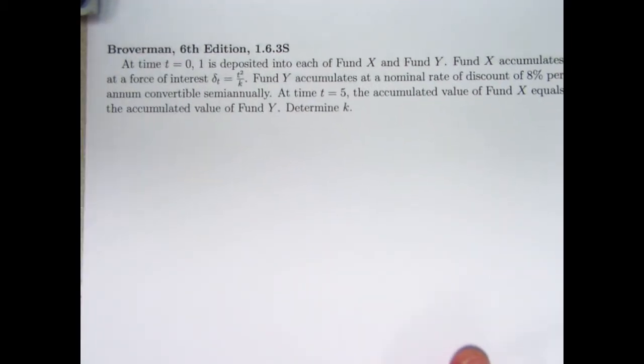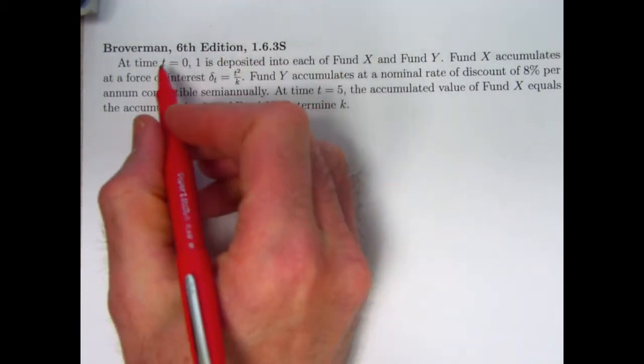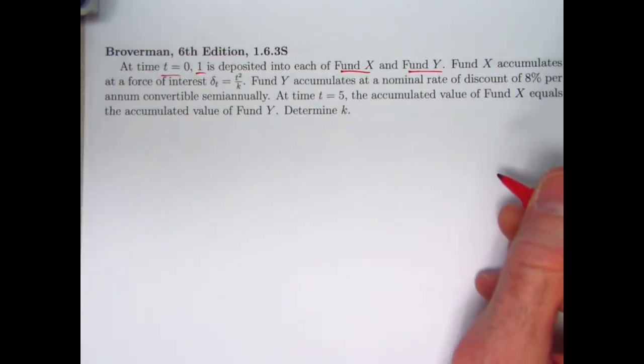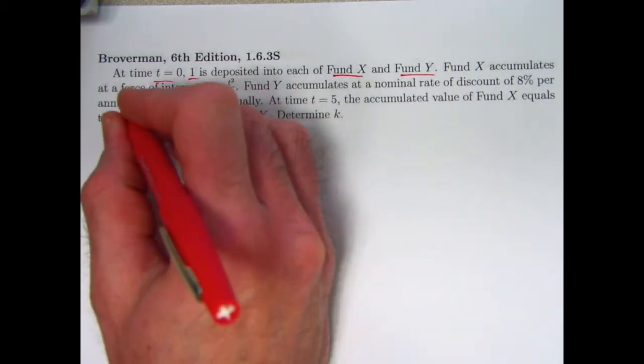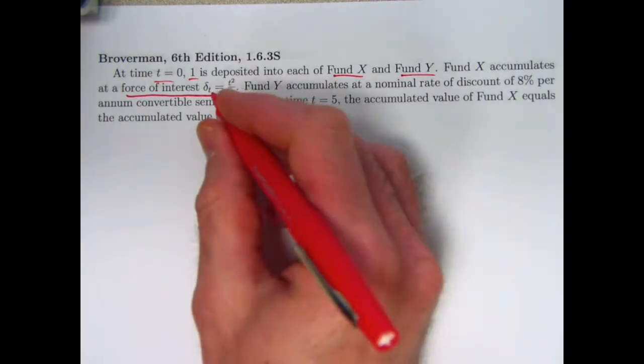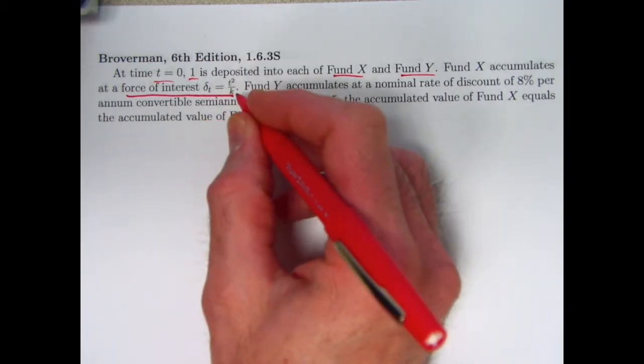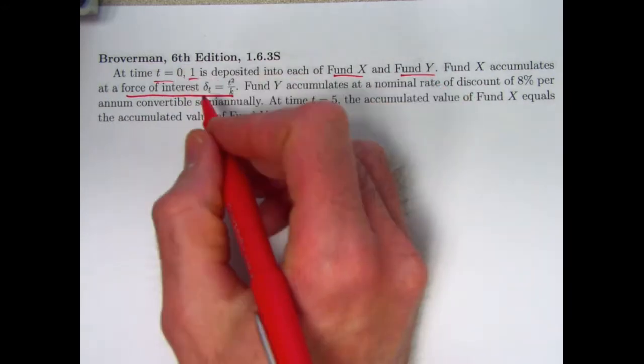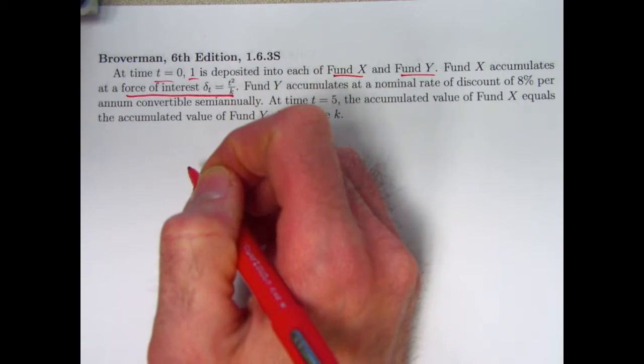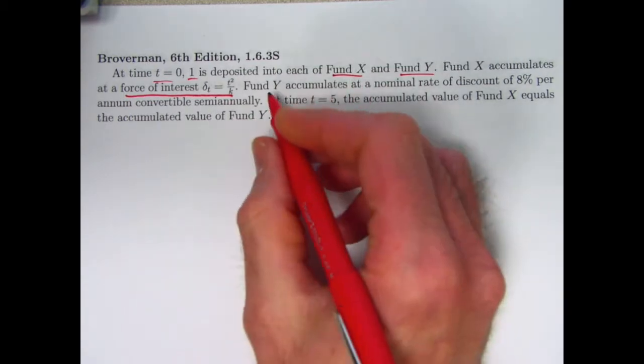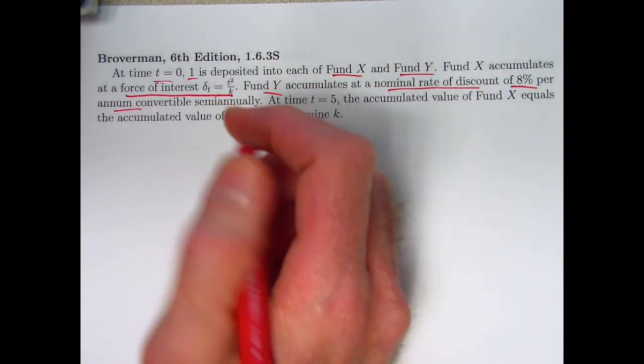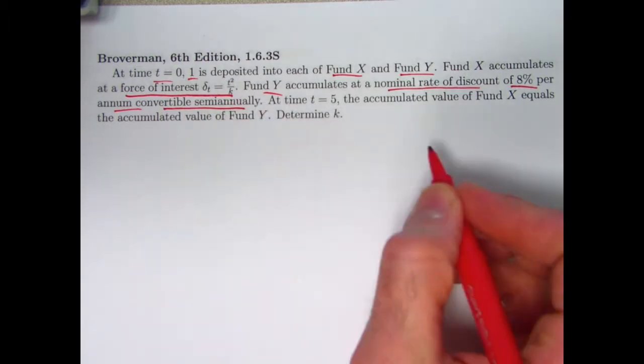Here it is. At time 0, 1 is deposited into two funds, x and y. Fund x accumulates at a force of interest delta sub t equal to t squared over k. So again, delta sub t is the notation for the force of interest. Here's its formula. It is a function of t. Fund y accumulates at a nominal rate of discount of 8% per annum, in other words per year, convertible semi-annually, twice per year.